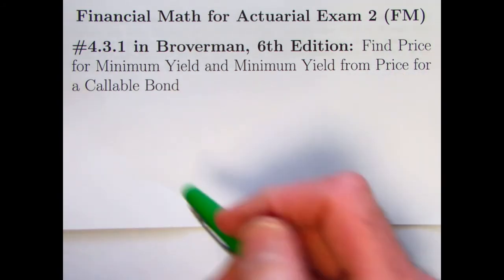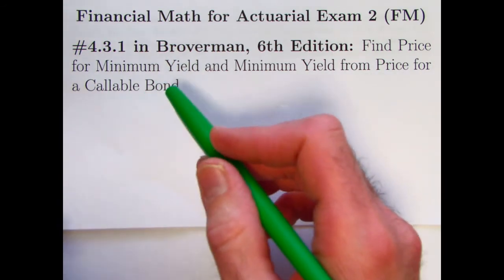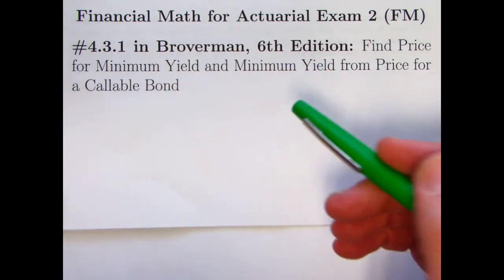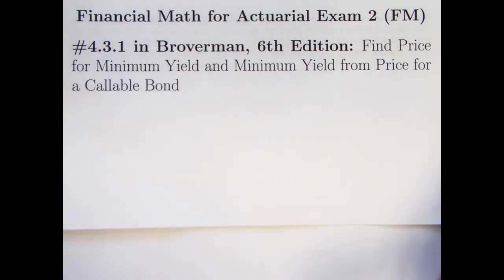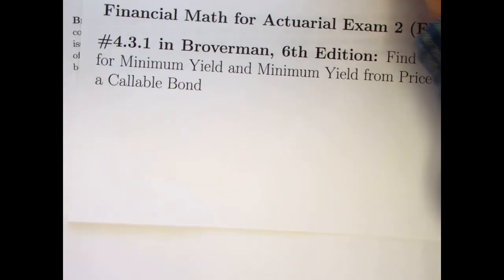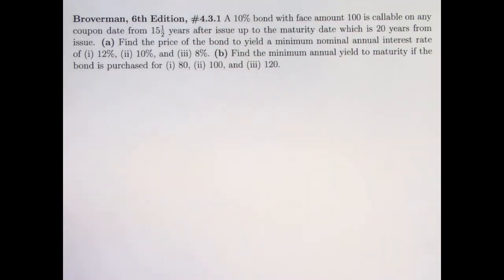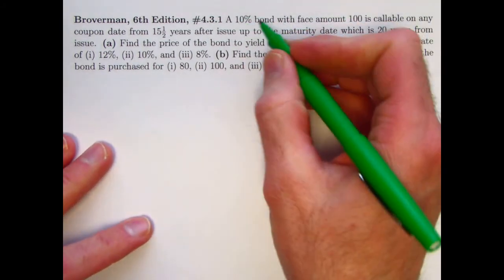You want to maybe find the price for getting a certain minimum yield, and also maybe if you know the price, find the minimum yield from that price in the situation with a callable bond. Now the actual calculations themselves are not that difficult. We can just use the formulas we've always used. What's difficult about the subject is that you have to think carefully. It's very easy to get confused about how to solve a problem like this. So before you use any formulas, just remember with callable bonds, you need to think clearly.